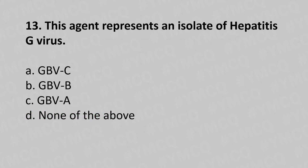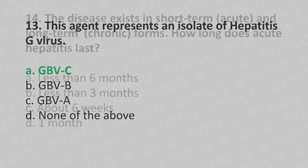Now let's move to question number 13. This agent represents an isolate of hepatitis G virus. Option A, GBV-C. Option B, GBV-B. Option C, GBV-A. Option D, none of the above. The answer is Option A, GBV-C.